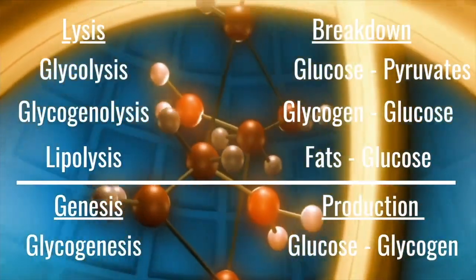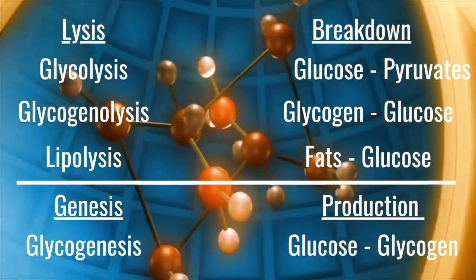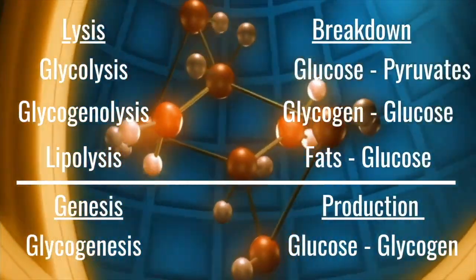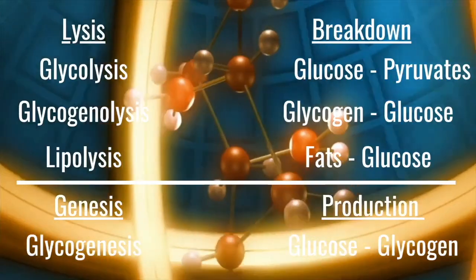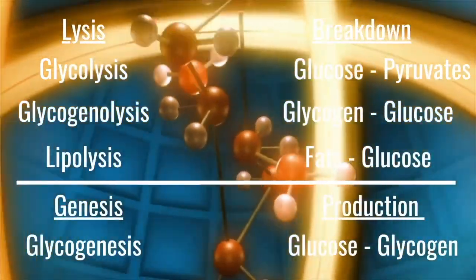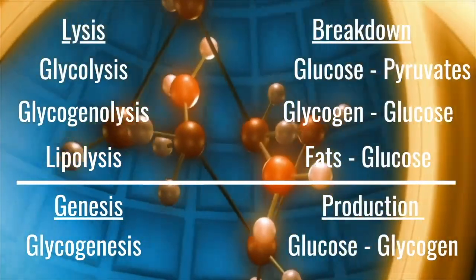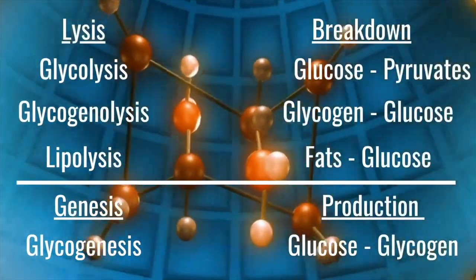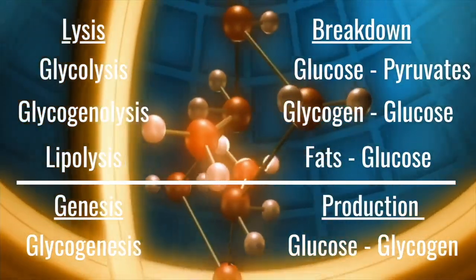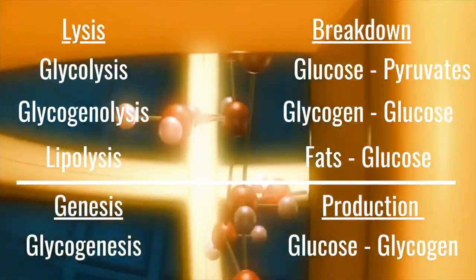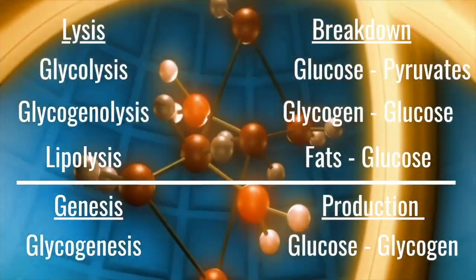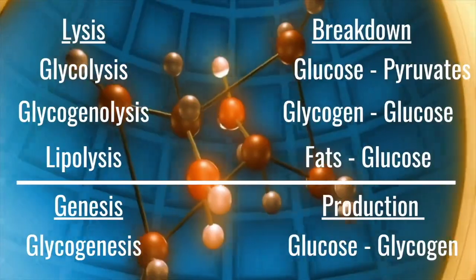Then there's also genesis, and the word genesis means to build up, to produce. Glycogenesis is the conversion of glucose into glycogen for storage. So let's make sure that we understand these key terms before we go into this unit.